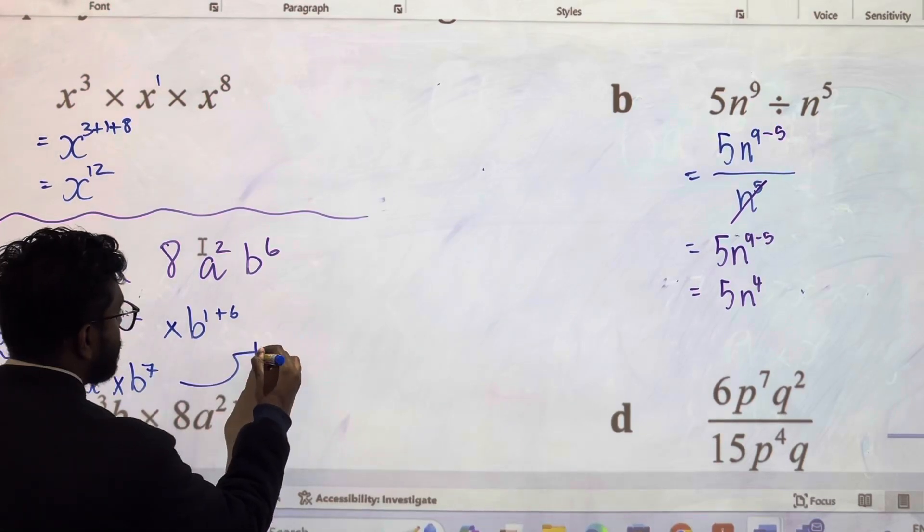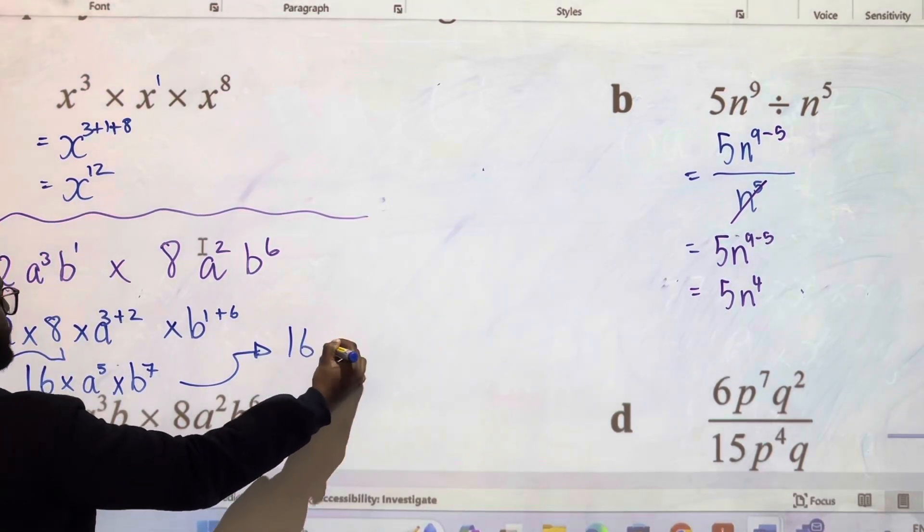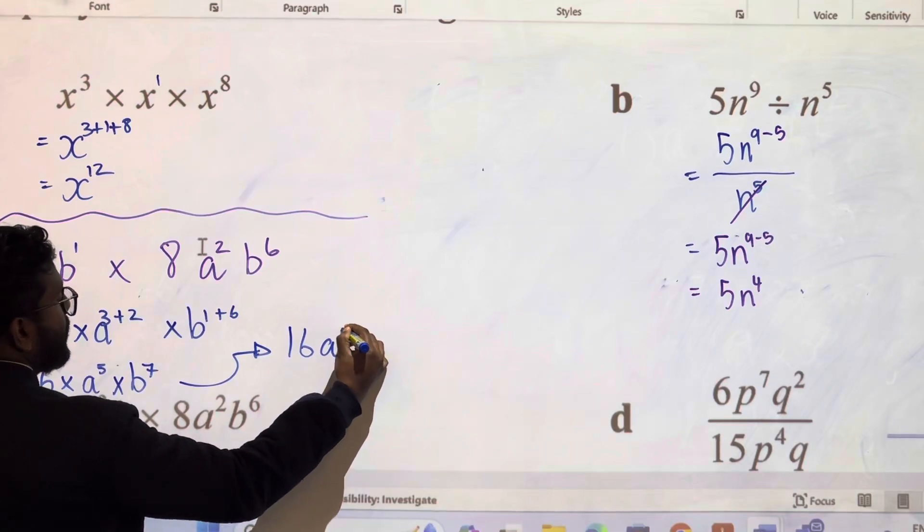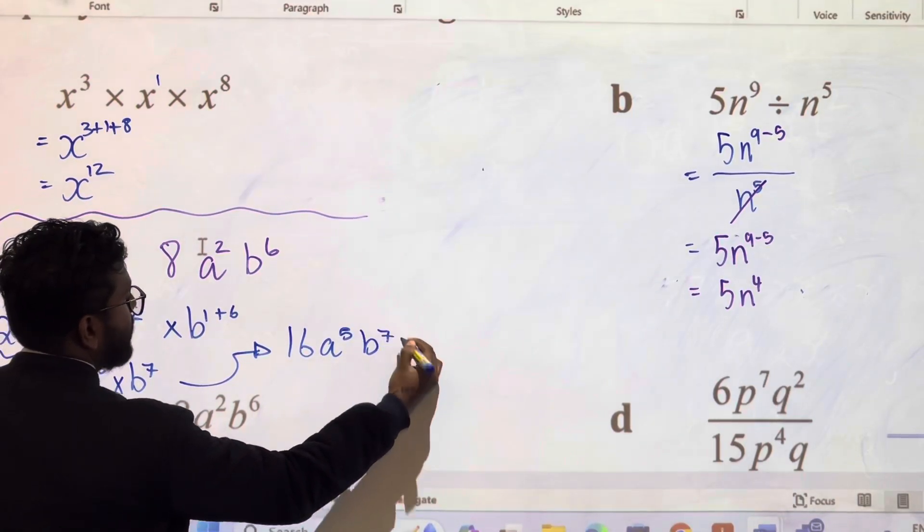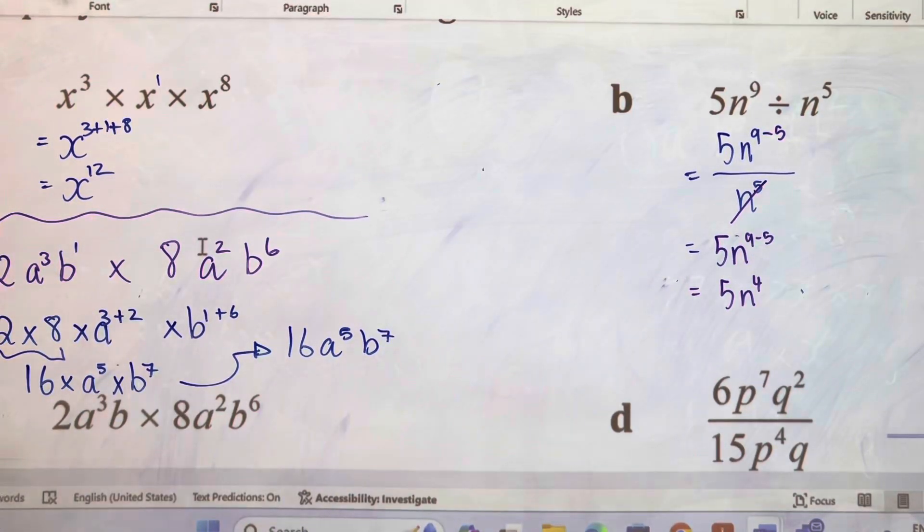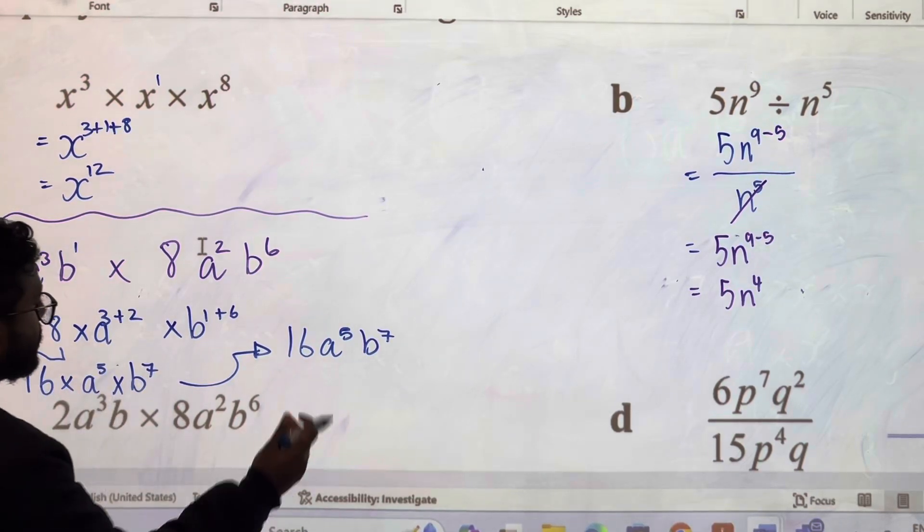Which is going to be 16 times a to the power of 5 and then times b to the power of 7. When you simplify this answer, it's going to be 16a to the power of 5, b to the power of 7. That is your final answer for that question. That's worth 2 marks, so you need working out. All of them you need working out.